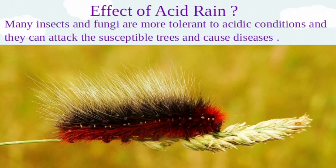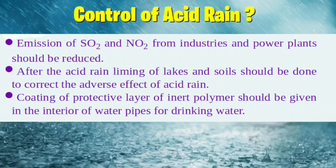Now let us find out how to control acid rain. First of all, emission of sulfur dioxide and nitrogen oxides from industries and power plants should be reduced. After acid rain occurs, liming of lakes and soils should be done to correct its adverse effects. A coating of protective layer of inert polymer should also be given to the interior of water pipes for drinking water.